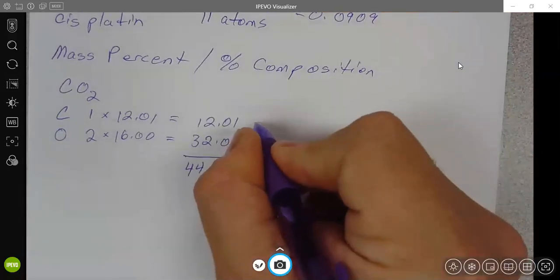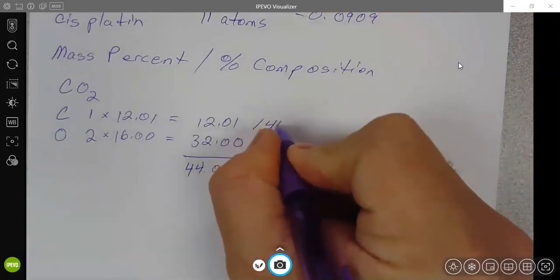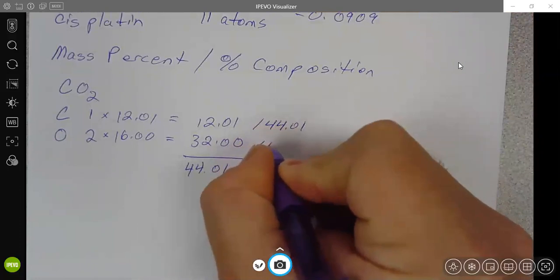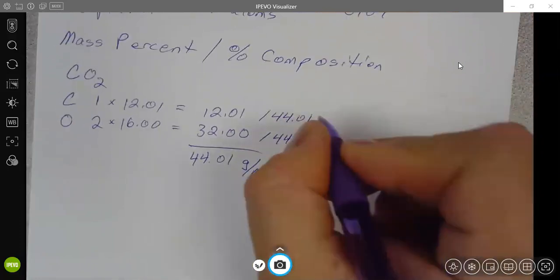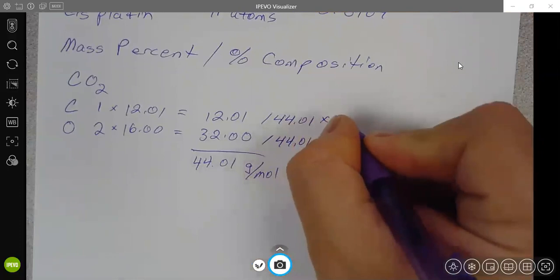So from this step here, we would divide each of these by the molar mass. And also multiply by 100 percent.